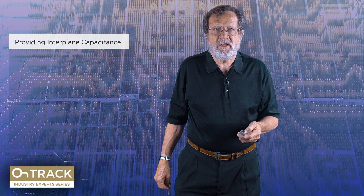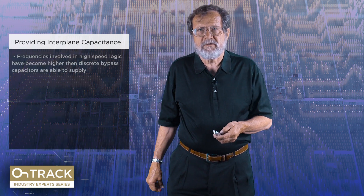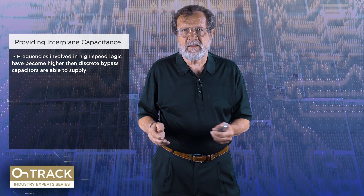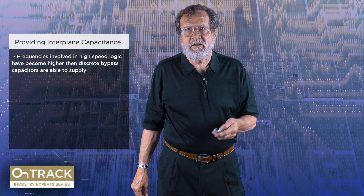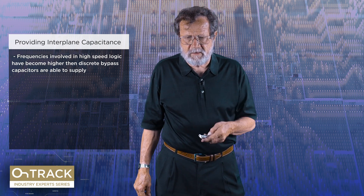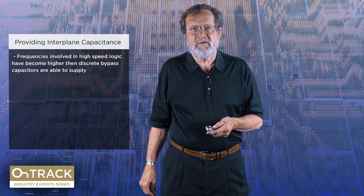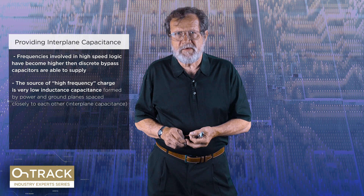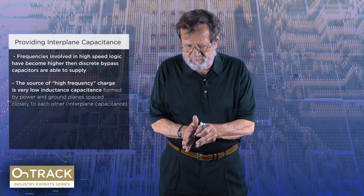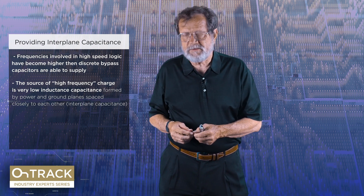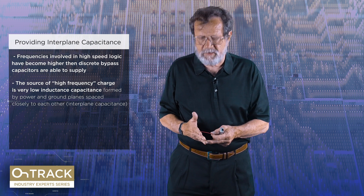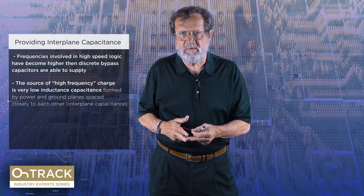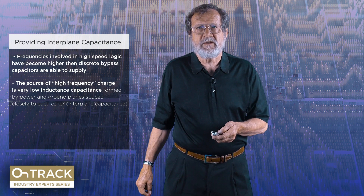Let's talk about interplane capacitance for the power delivery system. For at least the last 30 years, the frequencies involved in the edges that switch are too high for bypass caps — the classic 0.1 and 0.01 — they just don't do it. And that, by the way, is where the EMI problem comes from. We're going to solve that problem by adding interplane capacitance. This high-frequency charge needed to do the fast switching edges is going to come from the capacitance formed by two planes that are close to each other. The Achilles heel of all high-speed power delivery is inductance in the power path, and the plane capacitor has ultra-low inductance — about two orders of magnitude less than capacitors mounted on the board.